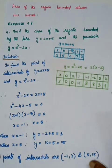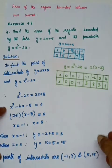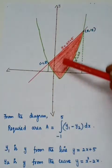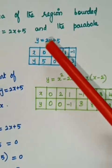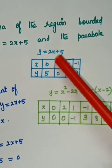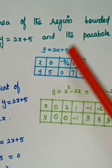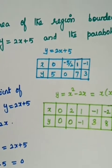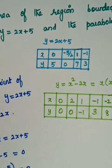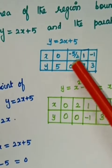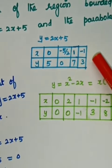To draw the diagram, first find points for the line y = 2x + 5. Put x = 0: y = 5, giving point (0, 5). Put y = 0: 2x + 5 = 0, so x = −5/2, giving point (−2.5, 0). These two points are enough to draw the line. You can also find one positive and one negative point if needed.